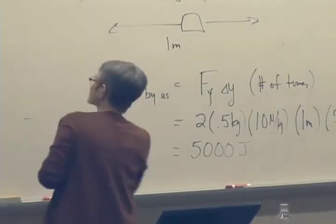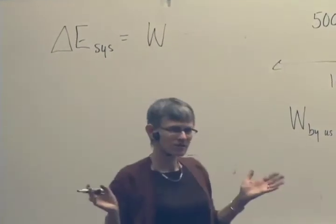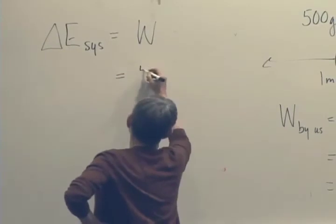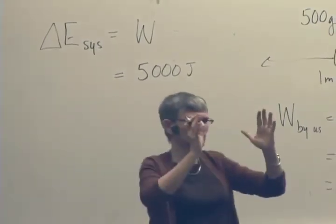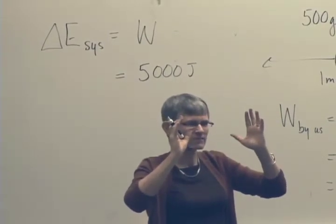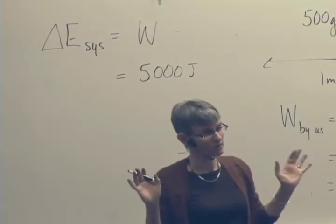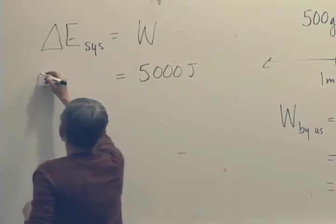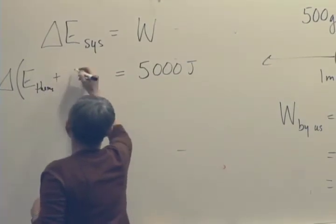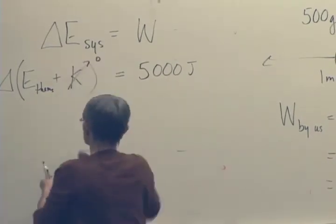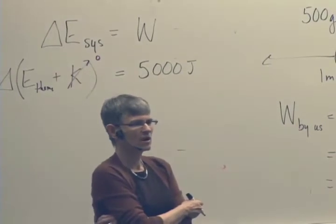The energy principle says the change in energy of the system equals the work done by the surroundings - that's us - so the change in energy of the system is 5,000 joules. When we're all done, the water comes to rest and is no longer sloshing around, so its kinetic energy ends up being zero. All that work must have gone into changing the thermal energy of the water.